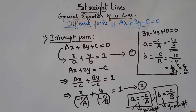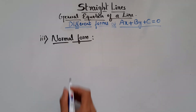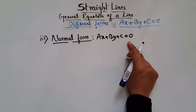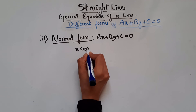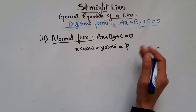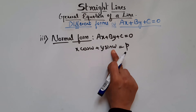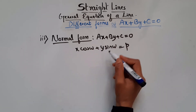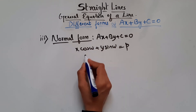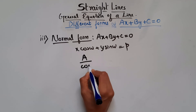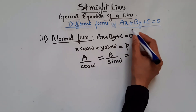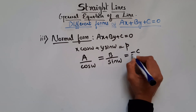Now let's see the last form: normal form. The general equation is AX plus BY plus C equals 0, and the normal form is x cos ω plus y sin ω equals p, where p is the perpendicular distance from the origin to the straight line, and ω is the angle made by that perpendicular along the x-axis. Since both equations represent the same line, their coefficients are proportional: A over cos ω equals B over sin ω equals minus C over p.